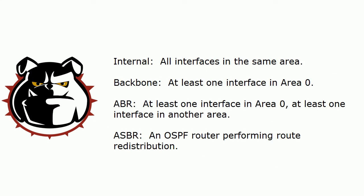So let's go over this information and then see it live on Cisco routers. The theory is not complex — certainly easier than remembering all the LSA types, but we've got to know this cold. An OSPF internal router has all its interfaces in the same area. A backbone router has at least one interface in area zero. An area border router has at least one interface in area zero and at least one interface in another area. And finally, the autonomous system border router — or ASBR — is an OSPF router performing route redistribution. That's it.